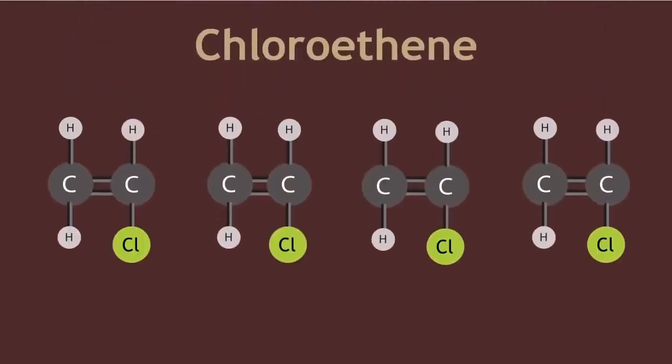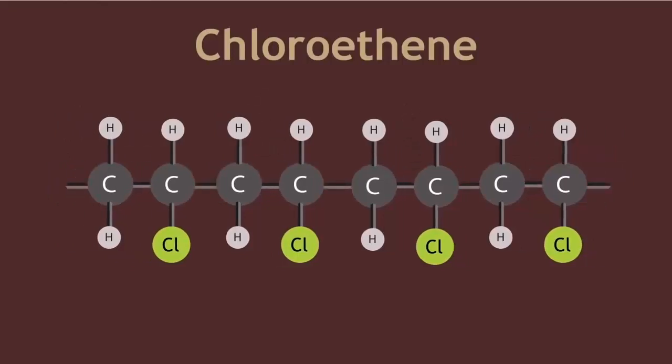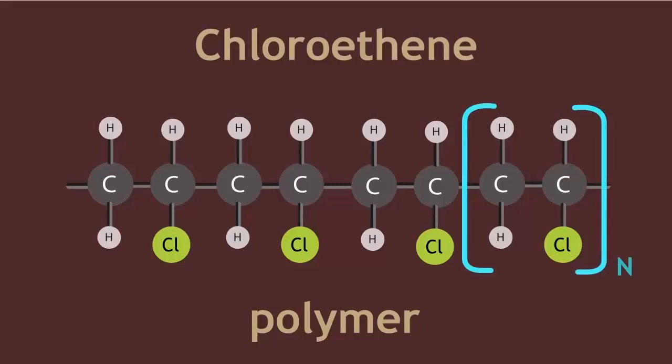Here are chloroethene molecules in a row. Now let us break the double bond and join these molecules together to form a polymer. Writing this as an equation we must show n molecules of chloroethene and the repeat unit of the polymer as shown.